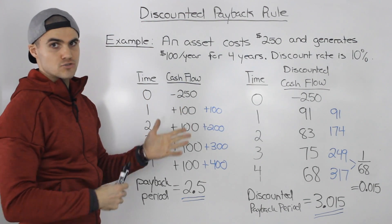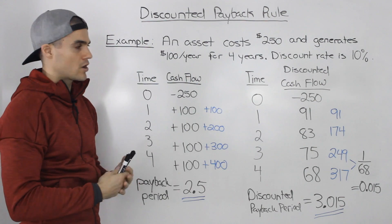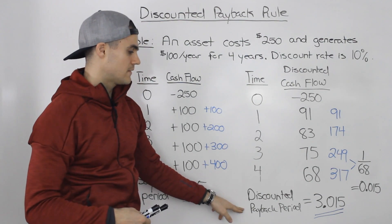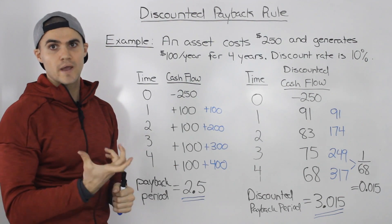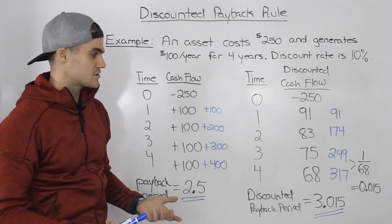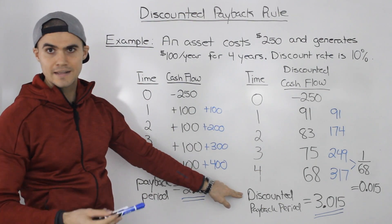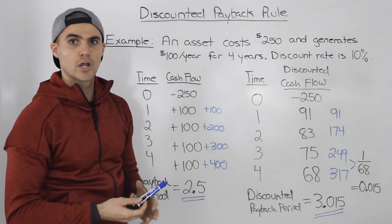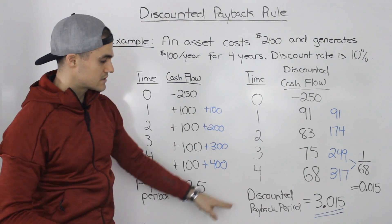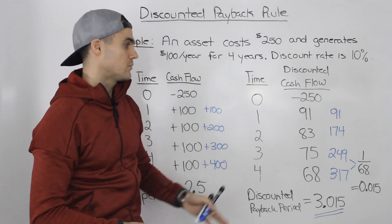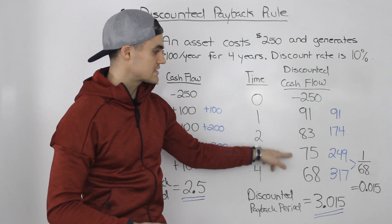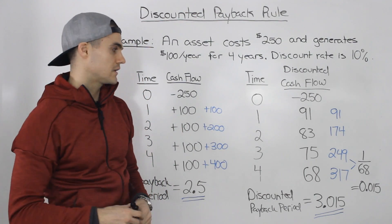The discounted payback rule — the actual rule for deciding whether to take on a project — is pretty much the same as the payback rule, except now we use the discounted payback period and compare it to a cutoff the company sets. For example, if the cutoff is four years, we'd accept this project because 3.015 is less than four. But if the cutoff is three years, we'd reject it because 3.015 exceeds that cutoff.